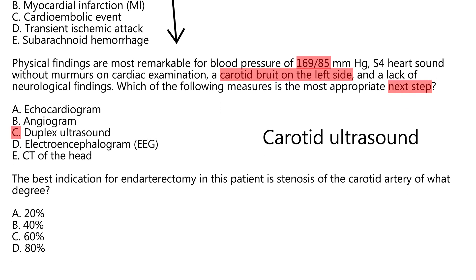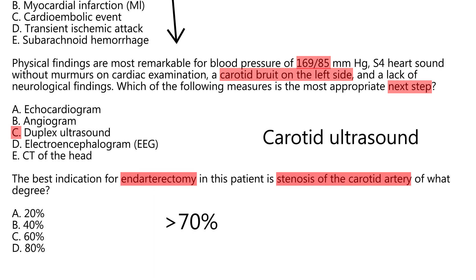Finally, the best indication for endarterectomy in this patient is stenosis of the carotid artery of what degree? The cutoff is greater than 70%. If stenosis is 70% or more, the patient is a good candidate for this surgical procedure. So the answer is 80%.